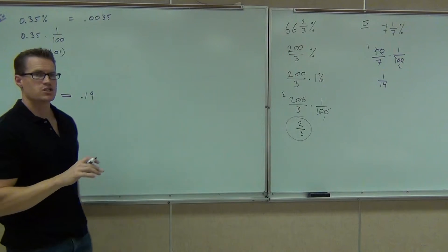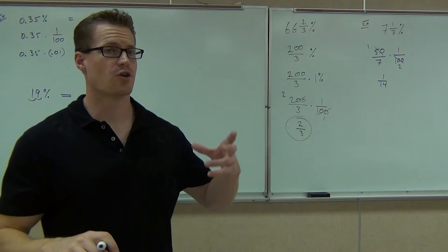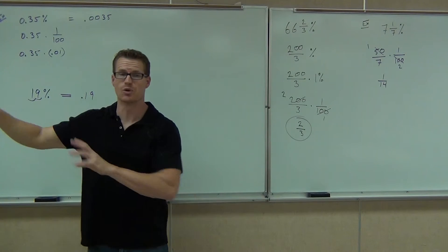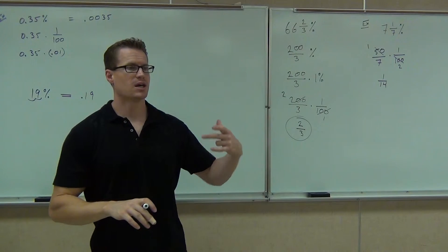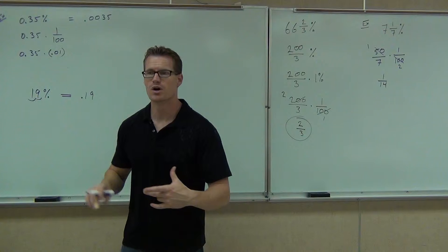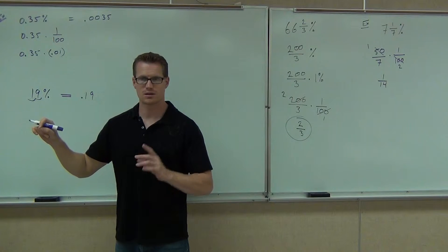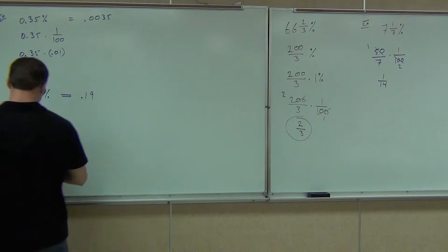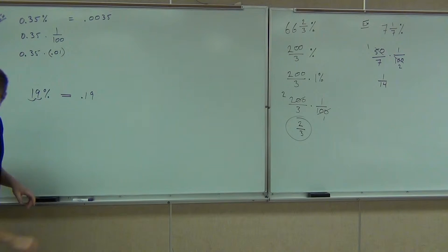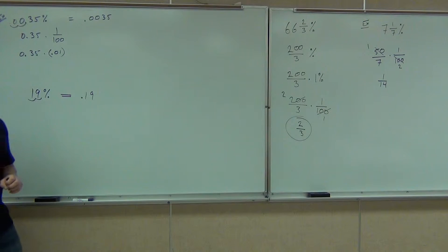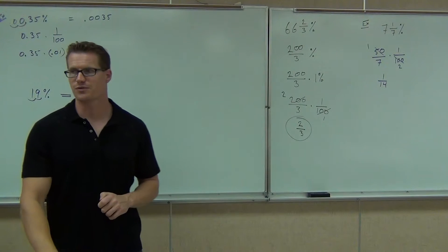So in order to get 0.0035, if you are changing — I'll make it real clear for you. If you're changing from a percent into a decimal, even if it already has a decimal, you move that decimal place two spots to the left. Which way was it? To the left. So here we go — we got 0.35%. We're going to go two spots: 0.0035.